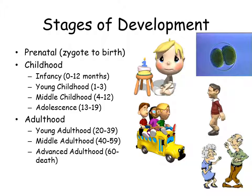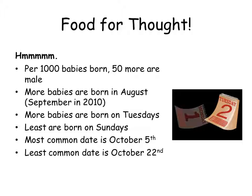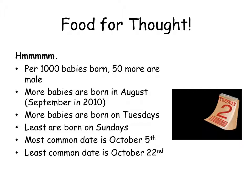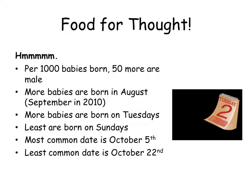Some interesting statistics: for every thousand babies born, 50 more are male, so more boys are born than girls. More babies are born in August — we had a fluke year in 2010 when more were born in September. More babies are born on a Tuesday, and Sundays have the fewest births. The most common birth date is October 5th and the least common is October 22nd.